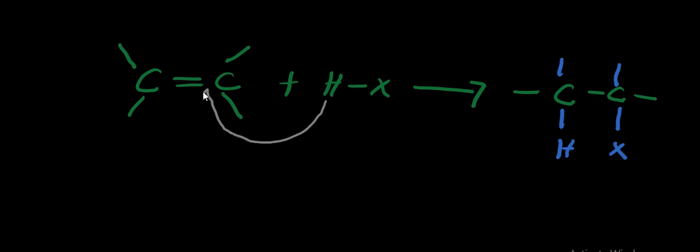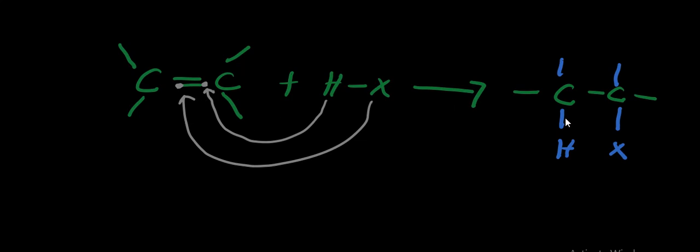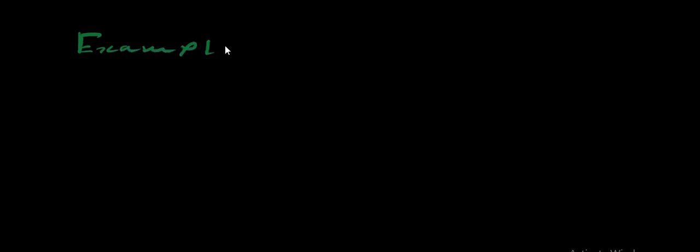The hydrogen reacts with one of the electrons of the double bond and the halogen reacts with the other electron. This breaks the double bond and forms two new single bonds, one C-H and one C-X. This is how alkyl halide formation via addition to alkenes works in general.